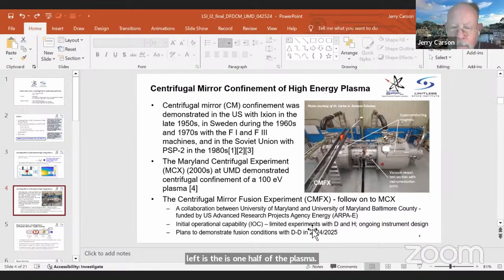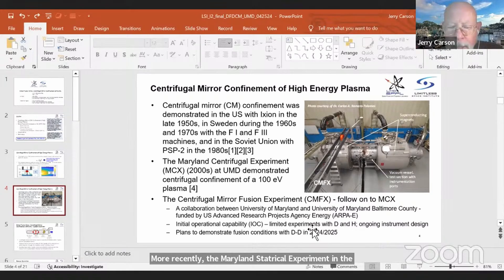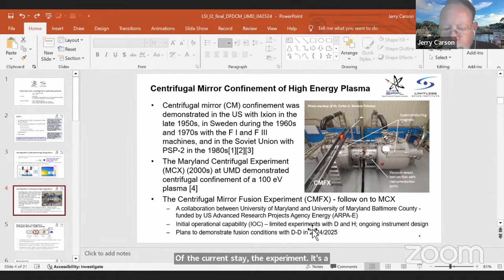CM's been demonstrated in the U.S. and Sweden and in the Soviet Union in the 1950s, 60s, 70s, and 80s. More recently, the Maryland centrifugal experiment in the 2000s demonstrated confinement of a 100 EV plasma. So, that was progress on their way to where they are now, the centrifugal mirror fusion experiment. So, follow on to MCX, and you'll see a photo up there on the right of the current state of the experiment. It's a collaboration between UMD and University of Maryland, Baltimore County, being funded by ARPA-E. They are currently doing limited experiments with deuterium and hydrogen, but mostly we're just working on getting their instruments refined to the point that they can get their burning plasma experiments done the second half, started the second half this year.